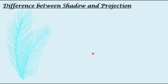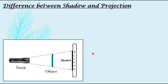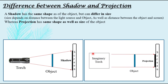Now, comparing shadow and projection and identifying the differences. The first difference: a shadow has the same shape as the object but can differ in size. The size depends on the distance between the light source and object, as well as the distance between the object and the screen. Whereas for a projection, the same shape as well as the same size of the object will be obtained — it does not matter where the torch is kept, what distance the object is from the torch, or how far the screen is from the object.